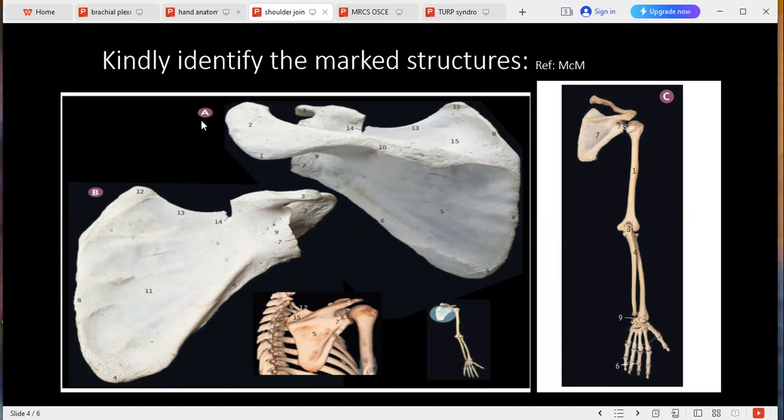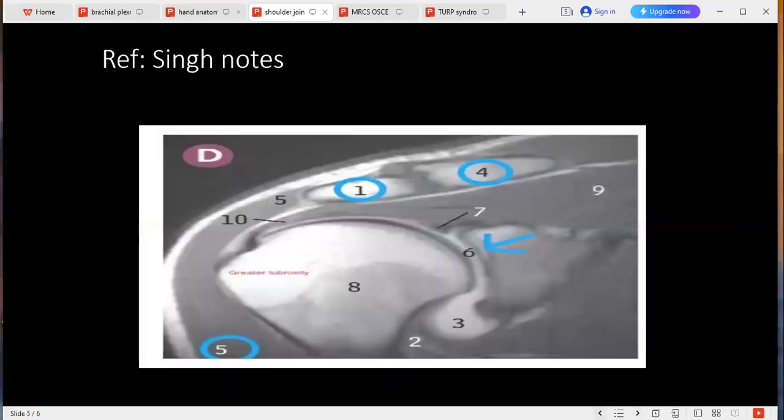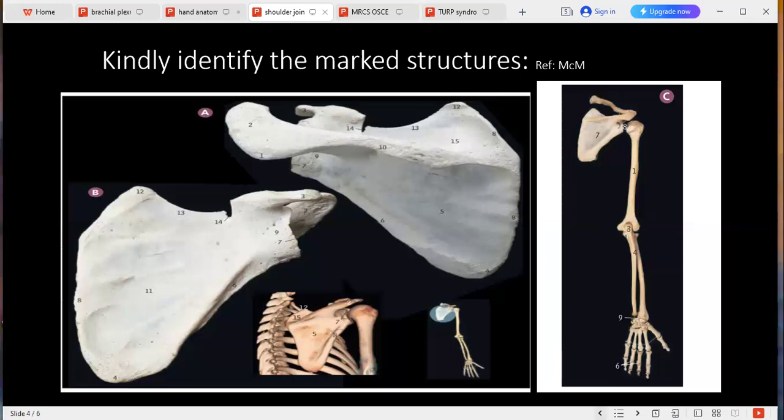If you can tell me, in picture A over here, what is number two? This is the acromion, this is the acromion process. If you can identify number 15 please. This is the supraspinous fossa. Number five, infraspinous fossa. Yes. Eleven, subscapular fossa. Okay, what attaches here? Subscapularis muscle. All right, innervated by which nerve? It is the subscapular nerve.